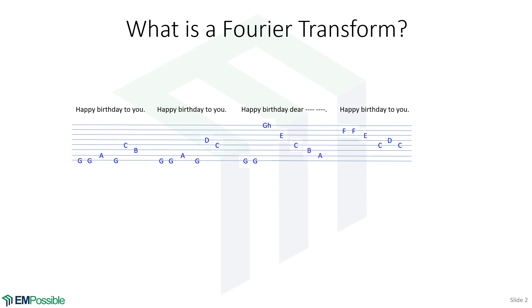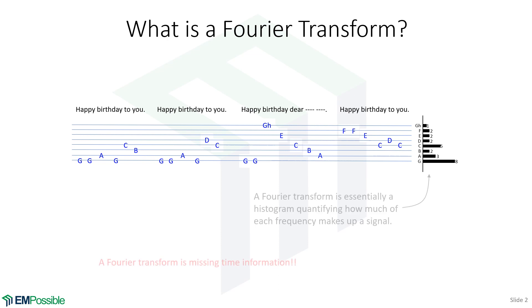Now, suppose we make a histogram of how many of each note are present in that song. We would come up with a plot, something like this. That plot — that is a Fourier transform. It is a map of how much of each frequency is in a signal.